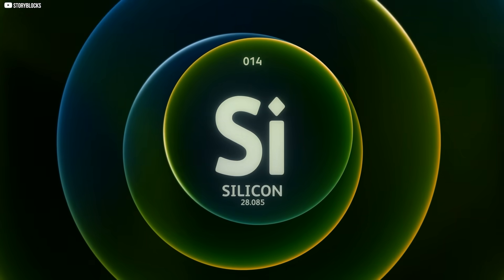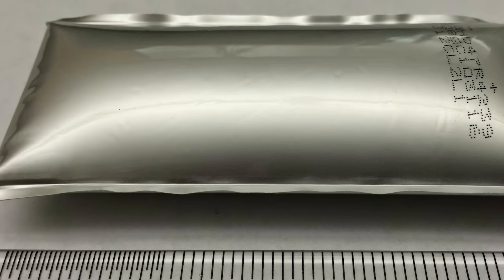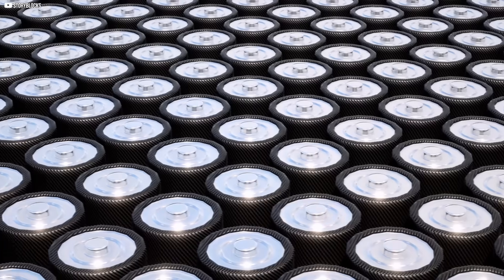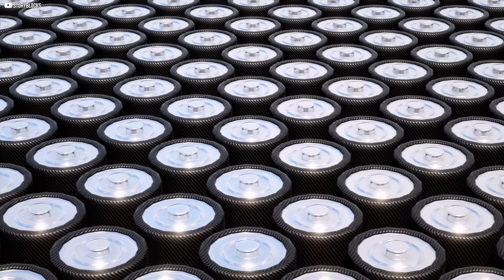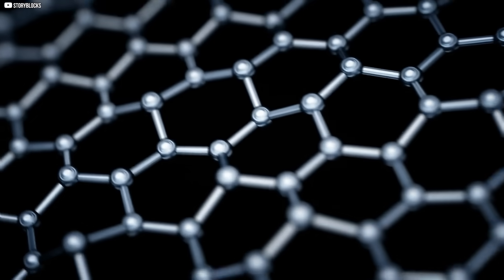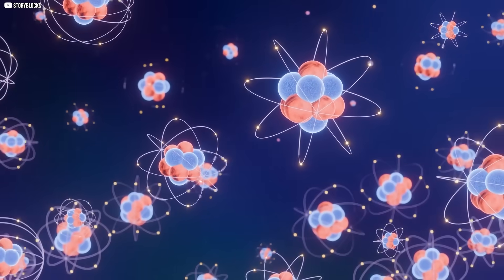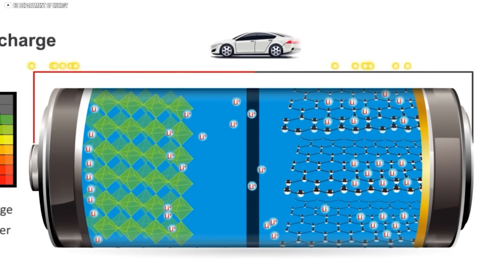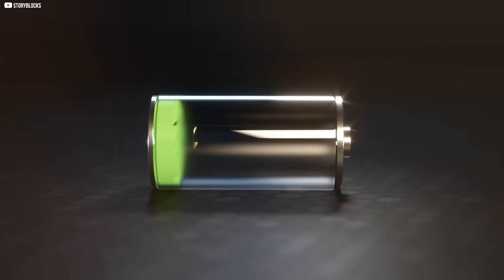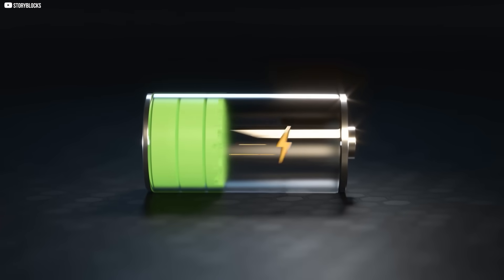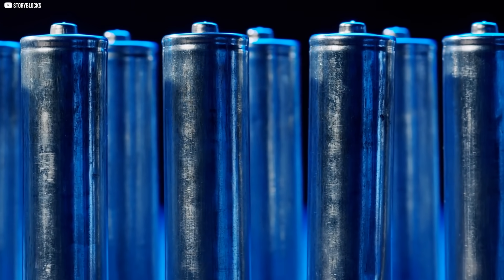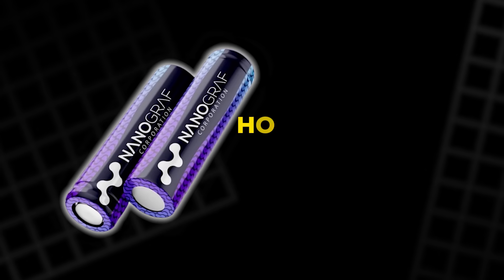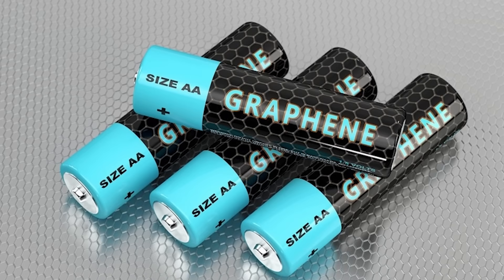But there's a problem. Silicon is unstable. It swells and cracks when it's charged. Over time, that destroys the battery. This is where Nanograph's real innovation shines. They wrap their silicon oxide in a layer of graphene, one atom thick, incredibly strong, incredibly conductive. It stabilizes the silicon, protects it, and allows the battery to charge faster, last longer, and survive harsh conditions. This isn't just a tweak to an old design. It's a rethinking of how batteries should work.